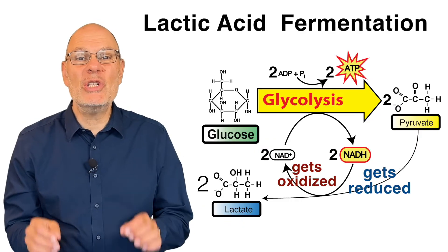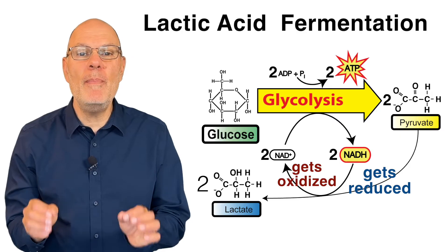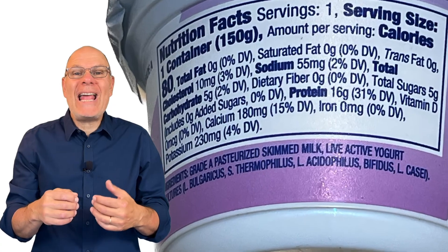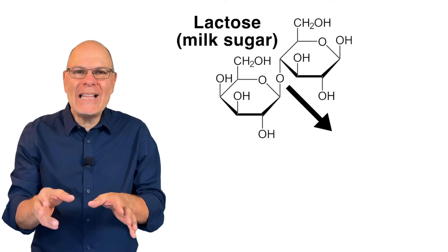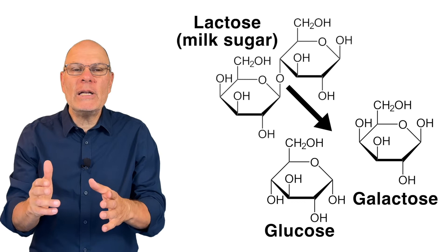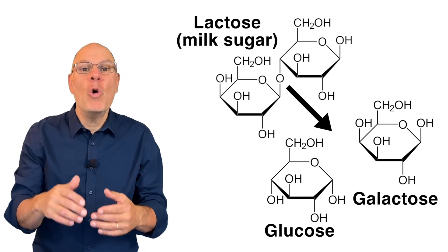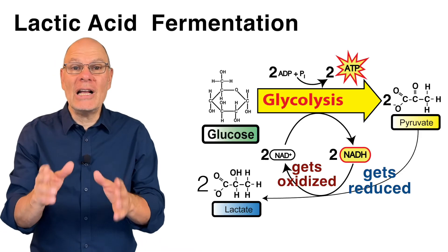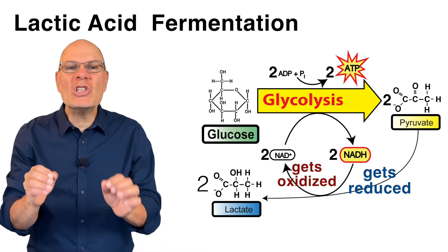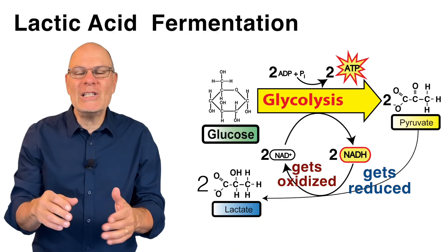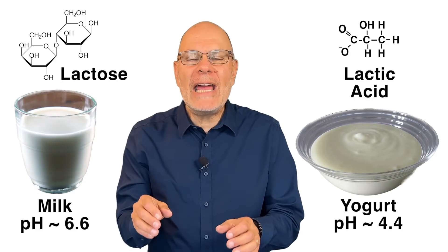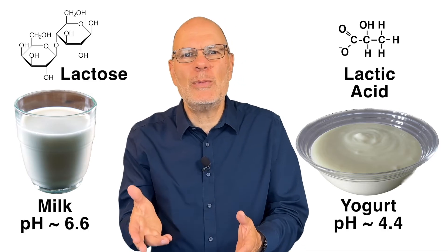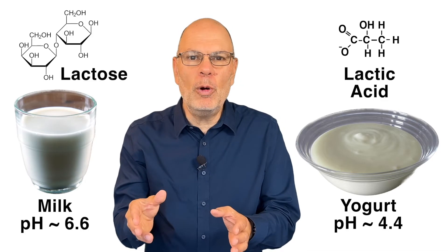Lactic acid fermentation is also what certain bacteria do to milk during the process of yogurt formation. These bacteria, which have names like acidophilus, take lactose — the disaccharide sugar in milk — and break it apart into monosaccharides, one of which is glucose and the other of which can be converted into glucose. Glycolysis follows, and then just like in animals, the pyruvate is converted into lactic acid. The lactic acid is what makes yogurt sour — that's why the pH in milk is about 6.6, while the pH of yogurt is about 4.4.